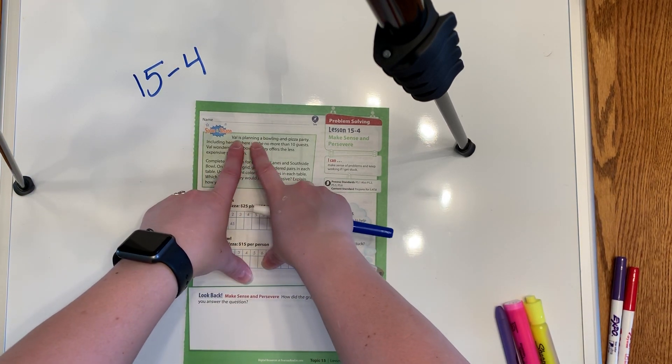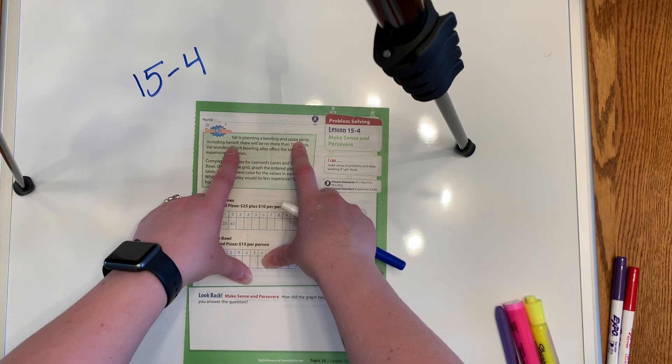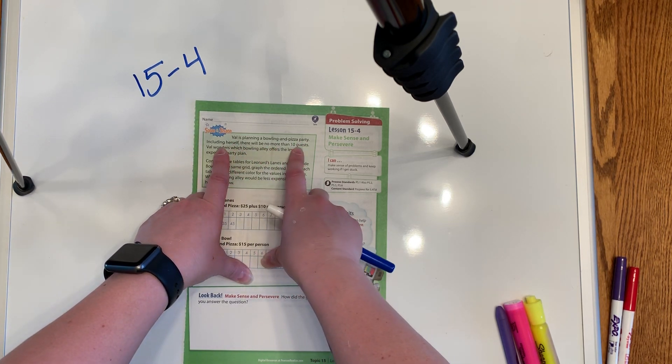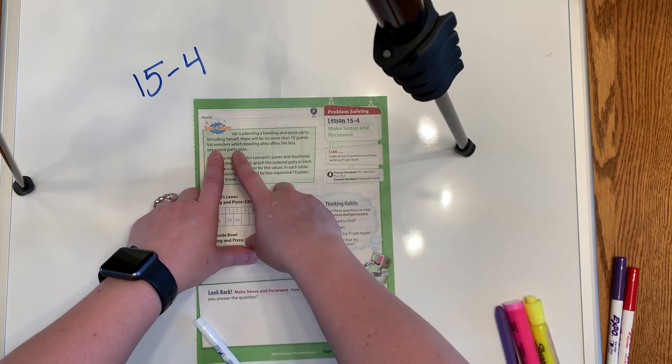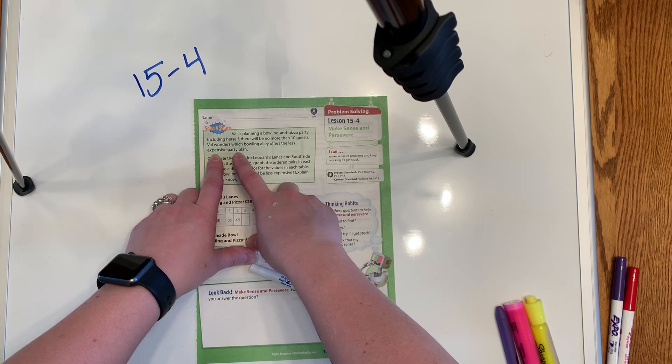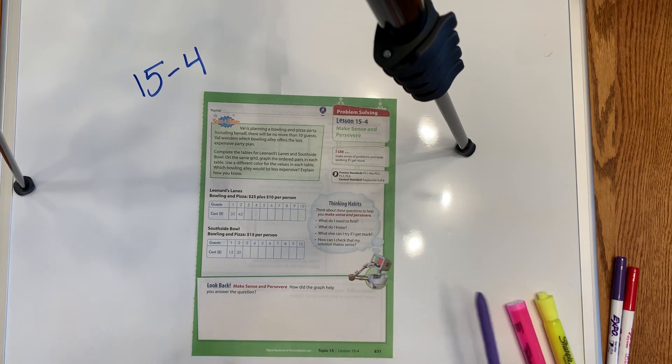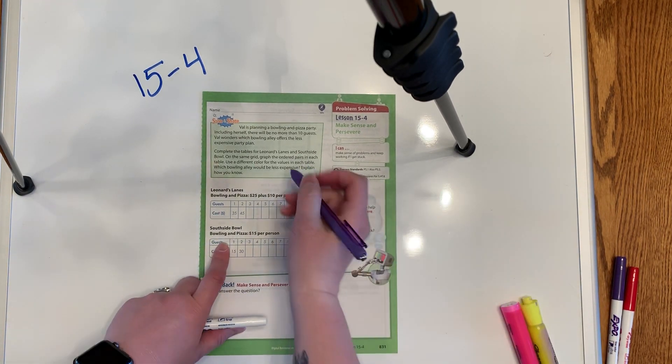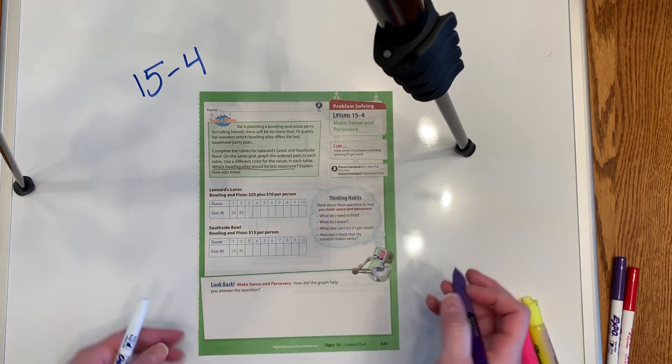So listen to this problem. It says, Val is planning a bowling and pizza party. That's something that you might do in real life. Including herself, there will be no more than 10 guests. So her and nine friends. Val wonders which bowling alley offers the less expensive party plan. So again, she's trying to be economical. Basically what she's looking for is which bowling alley is going to be less expensive overall.